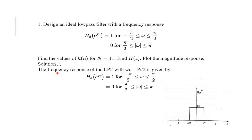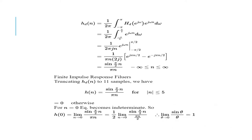Step 1: the frequency response of the low pass filter with ωc = π/2 is given as written. So write the function as given — HD(e^jω). Step 2: find the impulse response. HD(n) equals, by formula, 1/2π times the integral from -π to π of HD(e^jω) times e^(jωn) dω. We know HD(e^jω) equals 1, so for the given limits alone, wherever the magnitude is 1, take those limits.